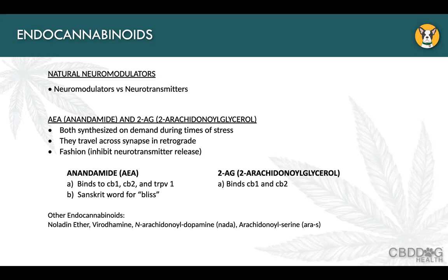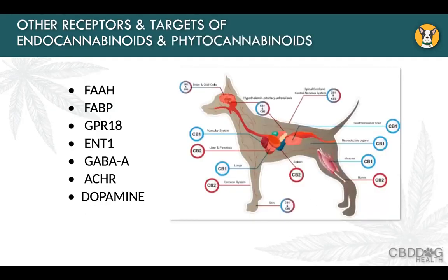Anandamide can be synthesized rapidly during acute stress to take care of short-term issues, and 2-AG will go up or down based on what's needed in the rest of the body. There are other receptors and targets of endocannabinoids — FAAH is one of the main ones discussed, particularly in cancer. Others like GABA and dopamine are more familiar, and all of these play roles affecting various receptors throughout the body, primarily in the central nervous system.